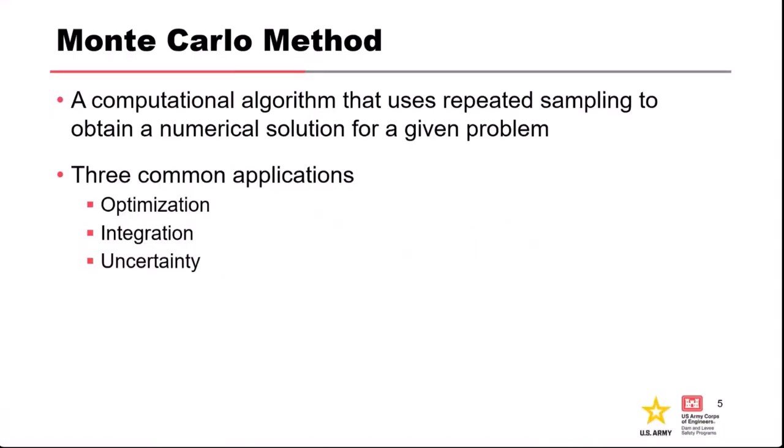So what is the Monte Carlo method? It's just an algorithm or a set of computational procedures where we use repeated sampling to get a numerical solution for a particular type of problem. Often we need to use it because there is no analytical solution — we can't solve it directly with math — or the analytical solution is so cumbersome that it's just easier and faster to do it with Monte Carlo. The key concept is the repeated sampling.